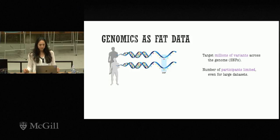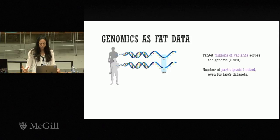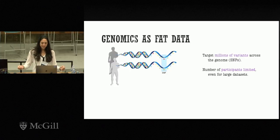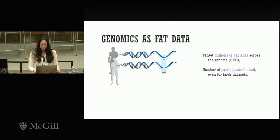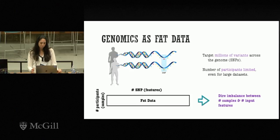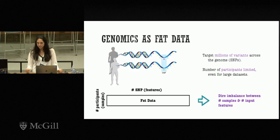To give an overview of the kind of data we're dealing with — we're dealing with SNP data. Modern genotyping techniques usually target millions of variants across the genome, and as a consequence we end up with a very high-dimensional feature vector per participant. However, even for very large studies, the number of participants is still limited, giving us far fewer samples than features.